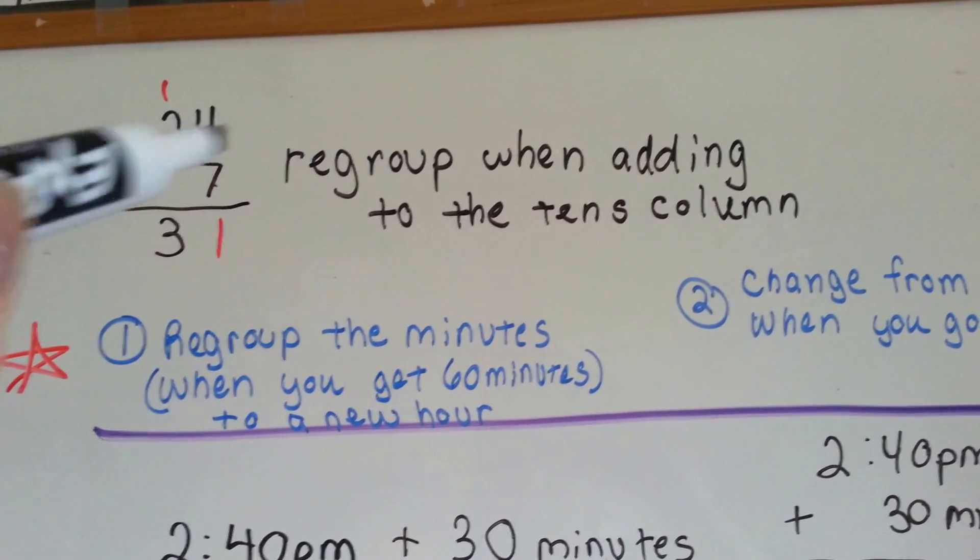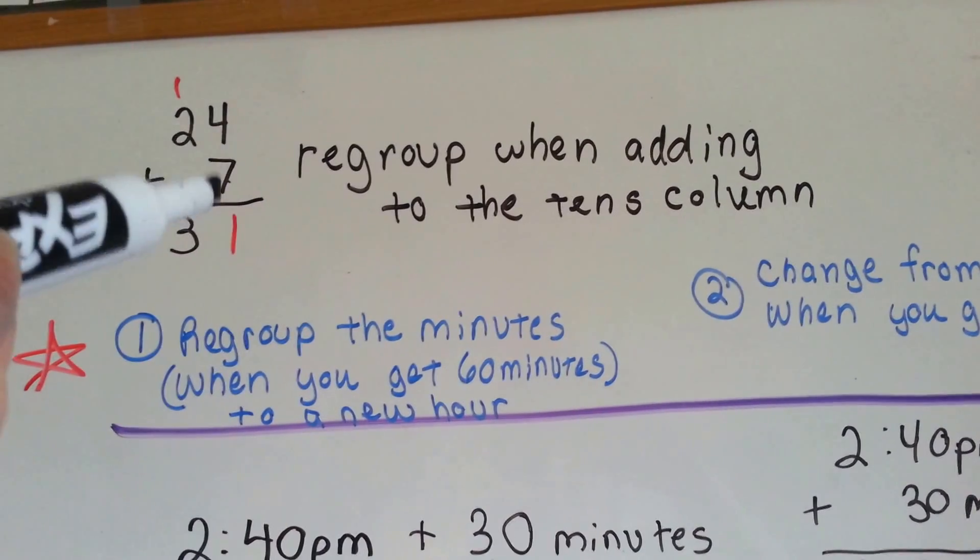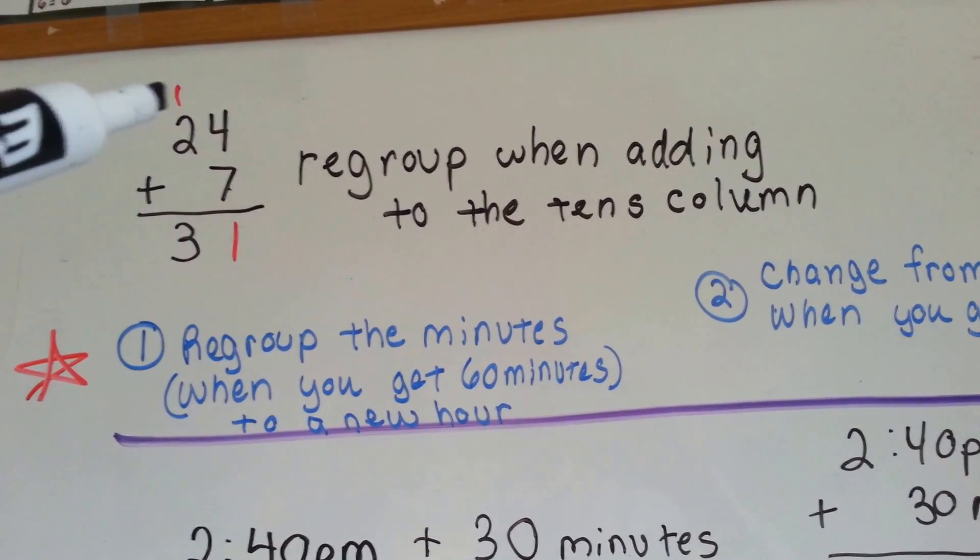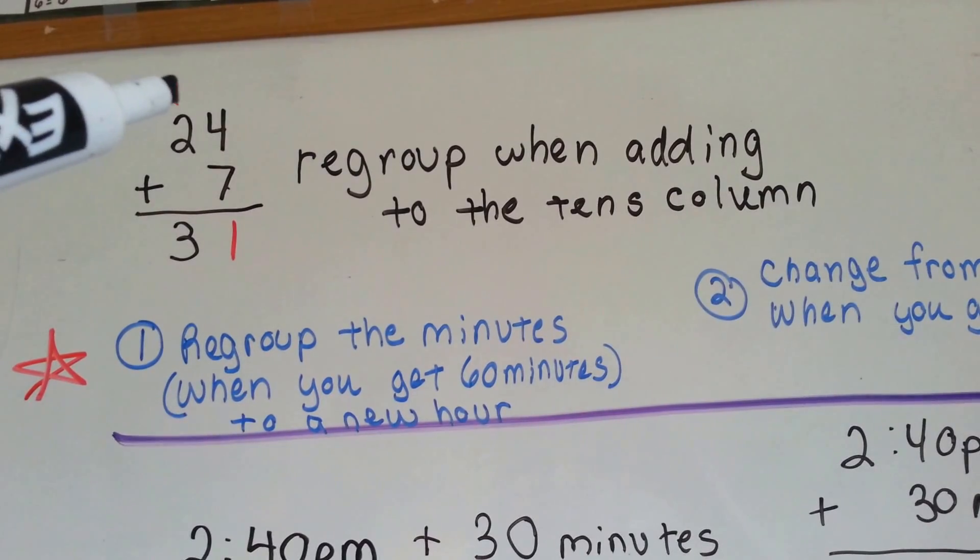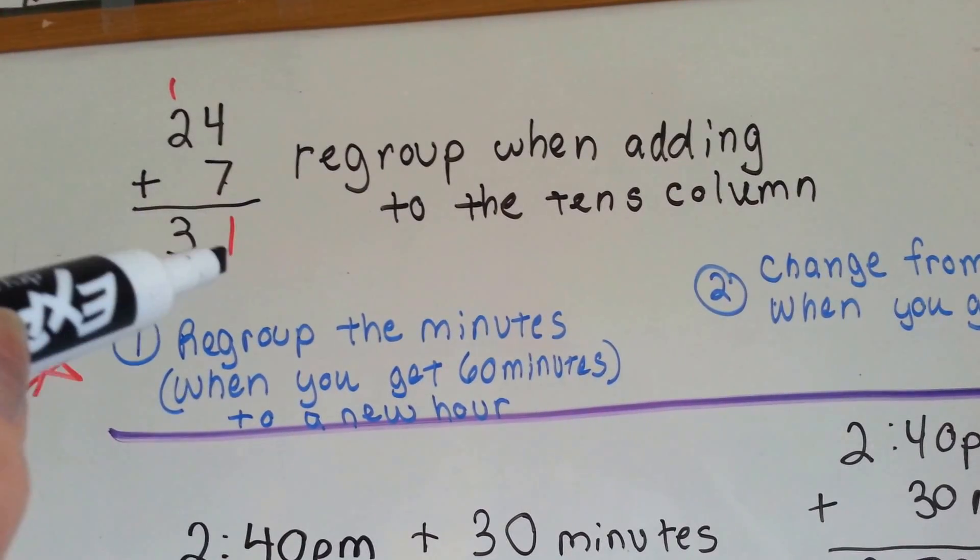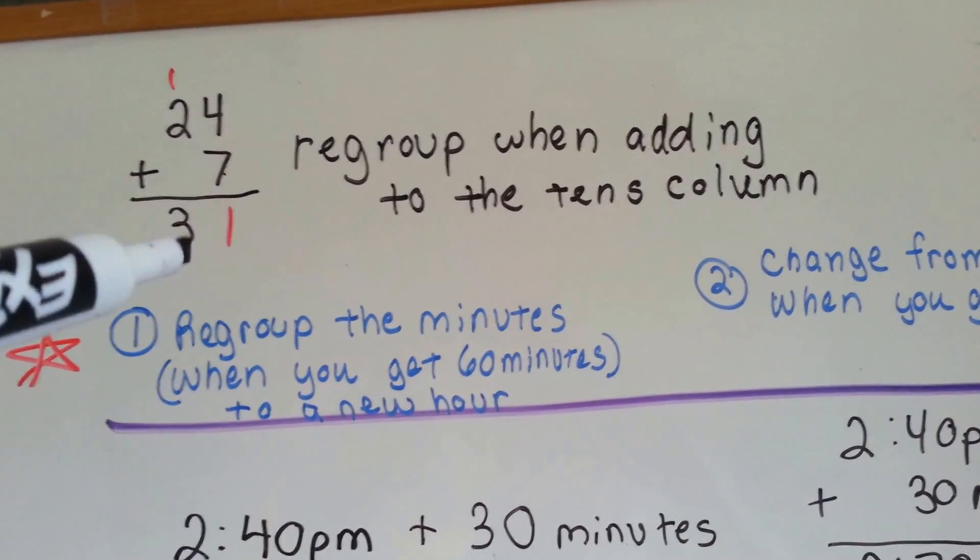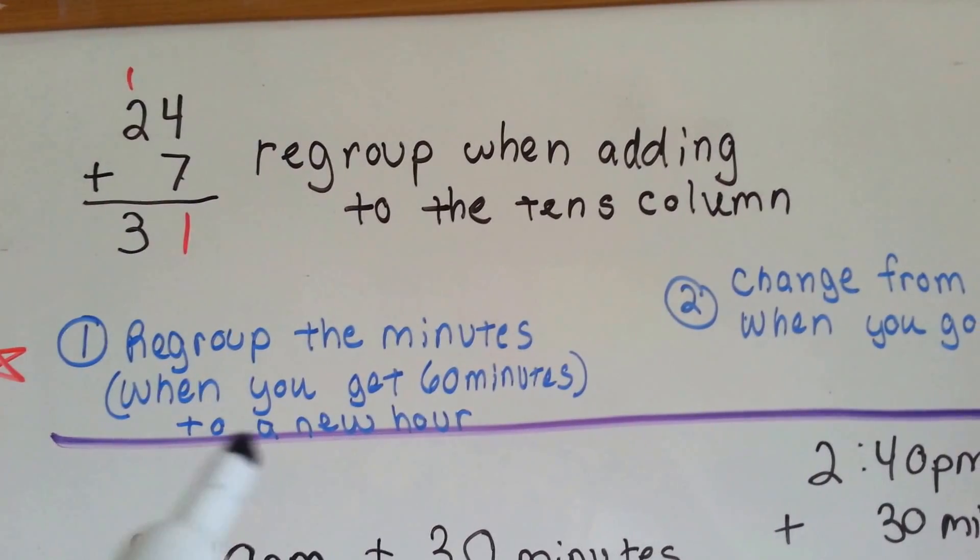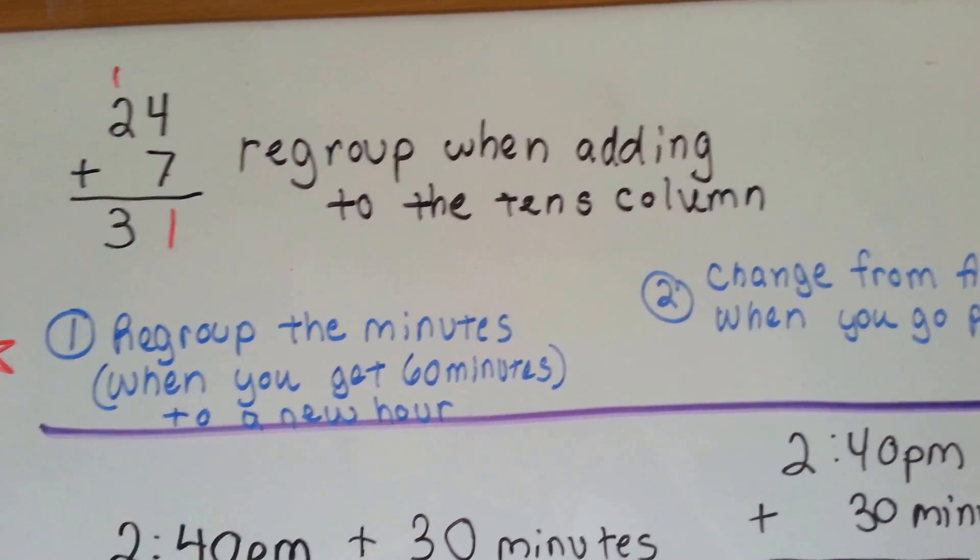When you add 24 plus 7, you have to regroup. The 4 and the 7 is 11. You have to regroup the 10 and put it over here on this side, and then put the 1 down here, and then you add these. So, you're regrouping the 10s. Well, we're going to regroup the minutes when you get to 60 minutes to a new hour.